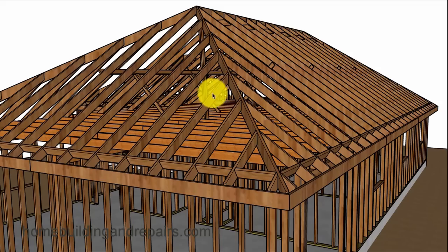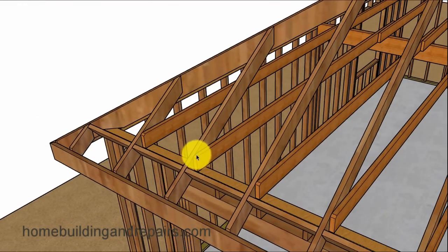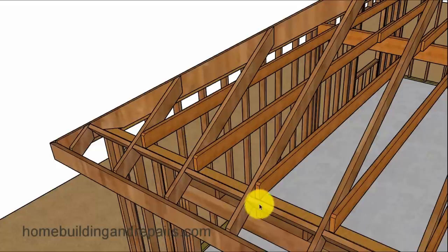Another view of it there. The hip jack rafters blocking the notch I was talking about. If this wasn't notched, it would be sticking up above the finished roof, putting a little bow in the plywood there.